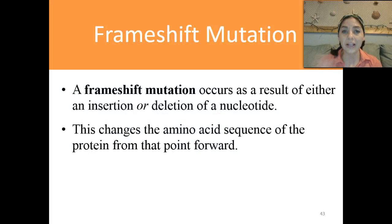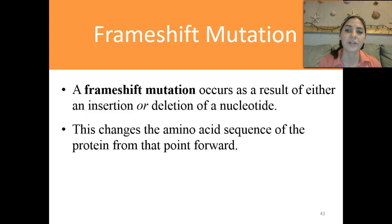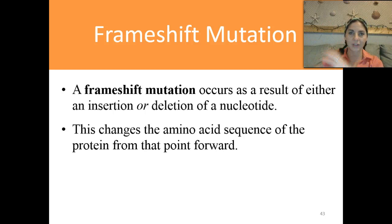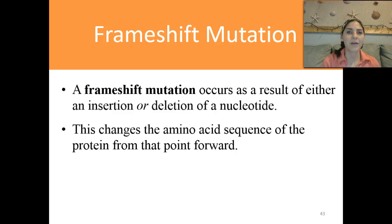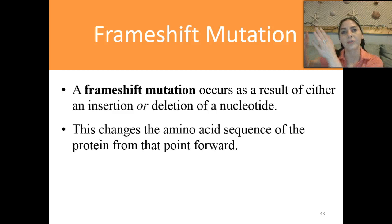The next type of mutation is a frameshift. A frameshift mutation occurs as a result of either an insertion or deletion of a nucleotide. We're either putting something in or taking something out — both of which skew everything. This changes the amino acid sequence of the protein from that point forward. For example, if I have ABC and delete C, I get ABD — it doesn't make sense anymore. If I insert Z to get AZB, it's completely shifting the entire sequence from that point on.